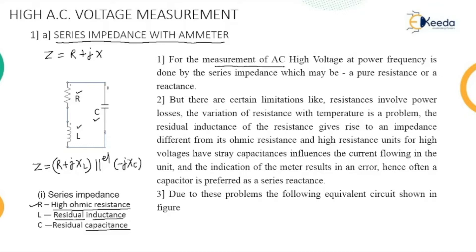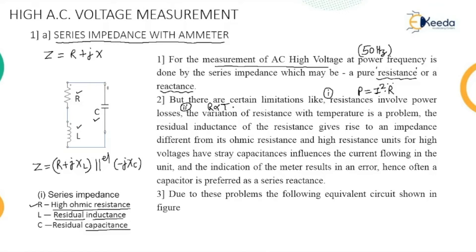This gives us the measurement of AC high voltage at normal power frequency of 50 Hz. That may be a pure resistance or a pure reactance. If pure resistance is used in the network, there are certain limitations. First, resistance involves power loss given by P = I²R. Second, resistance varies with temperature — an increase in resistance raises the temperature, and that is a problem.